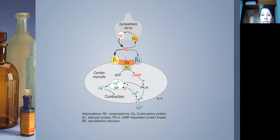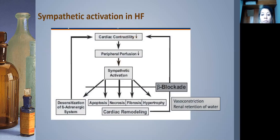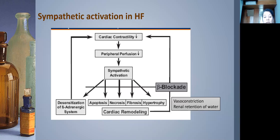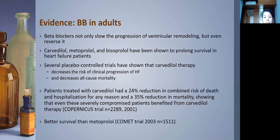In heart failure, decreased cardiac contractility causes decreased peripheral perfusion and chronic sympathetic activation. This sympathetic activation is detrimental — causing apoptosis, necrosis, fibrosis, and hypertrophy of the cardiac wall — what we call cardiac remodeling. Beta blockade blocks these detrimental effects. Chronic sympathetic activation also down-regulates beta receptors, causing desensitization of the beta-adrenergic system.